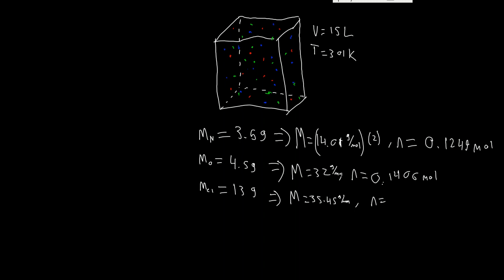Remember that's diatomic, I forgot to write it in here. Two times, there you go. And what's that going to give us? That's going to give us 0.1834 moles. And so, that gives us our three molar amounts of each gas.